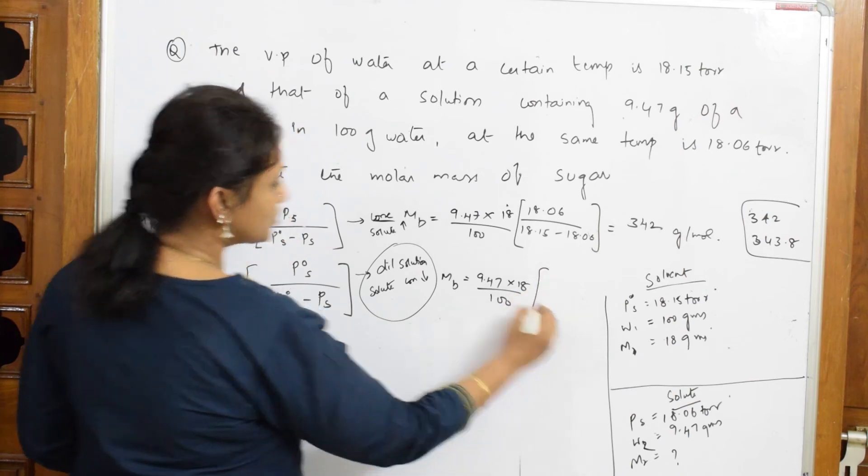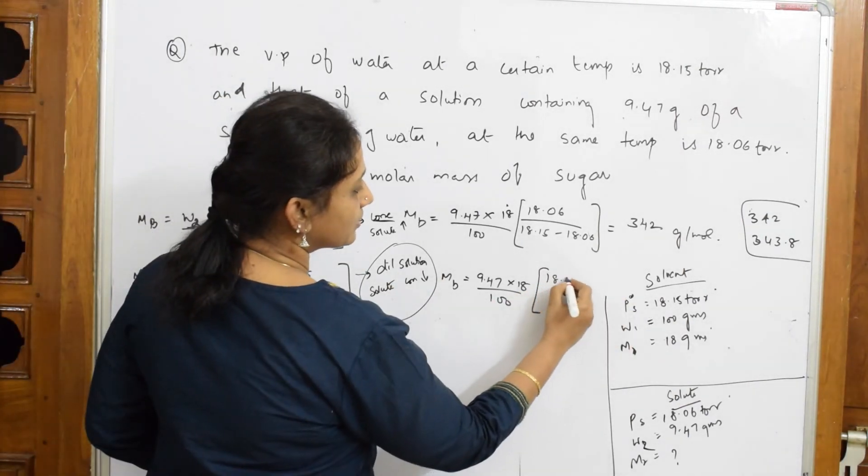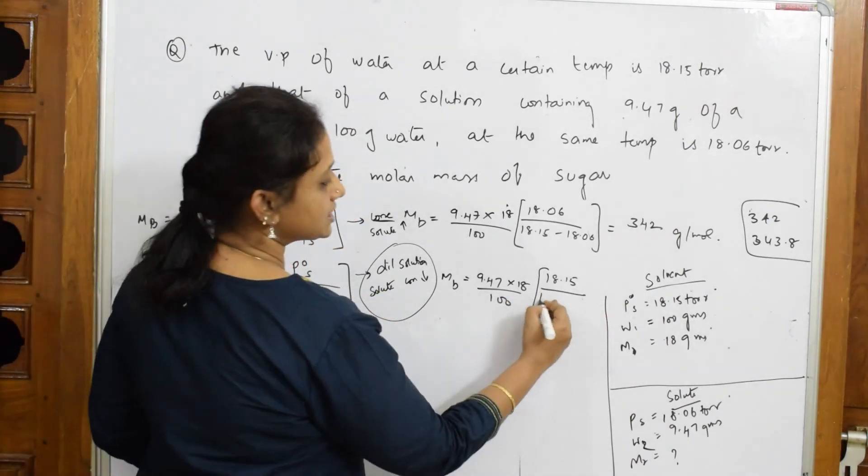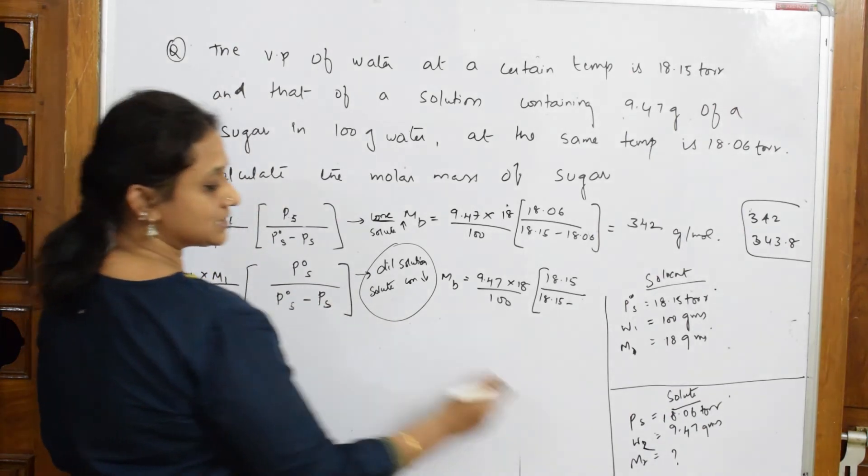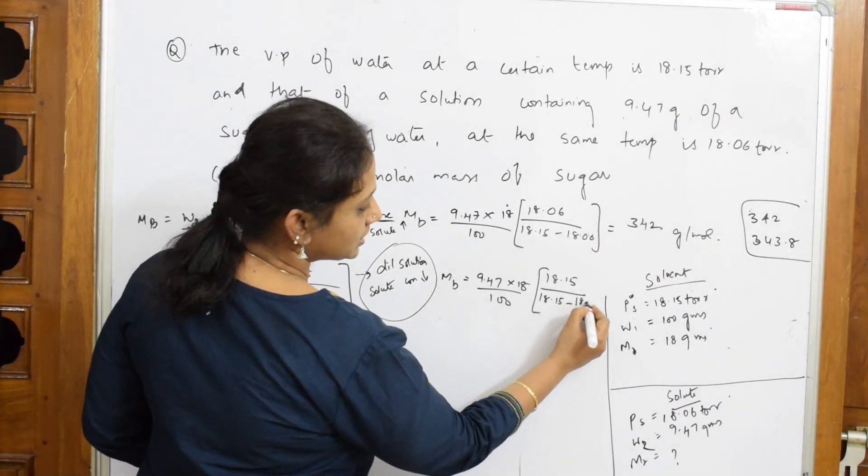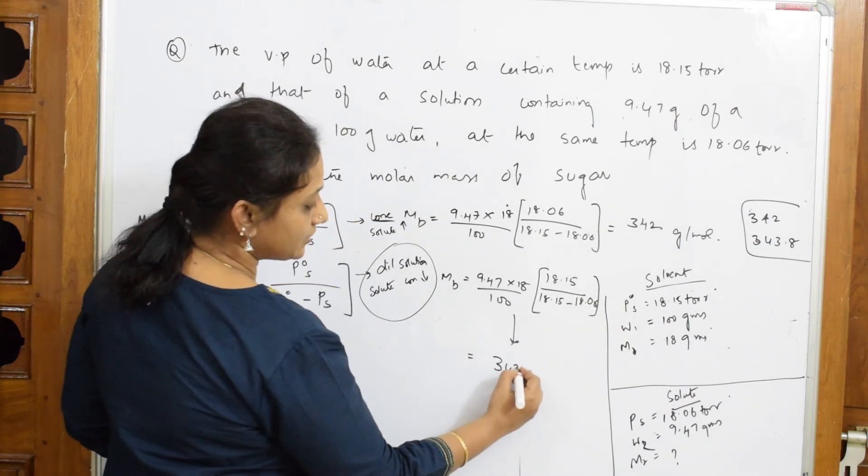Here it is P₀ˢ, so 18.15 divided by—this is P₀ˢ again—18.15 minus your Pˢ for the particular solution, that is 18.06. So when I solve this, I get an answer of 342.8 grams per mole.